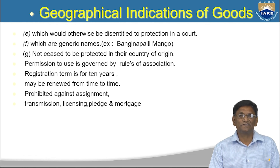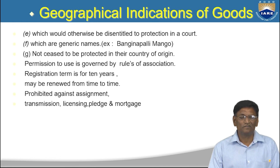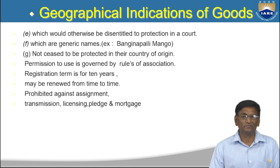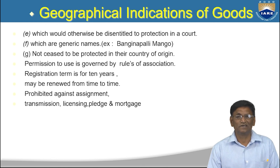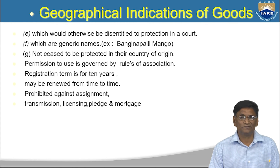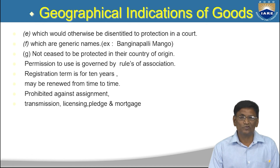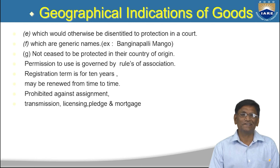The period for geographical indication is 10 years and it cannot be assigned like copyrights or patents. You cannot sell your GI right to somebody in another city to market the product there, nor can you give a license or pledge it. With this, we will stop today and continue other IP indications in the next section. Thank you.